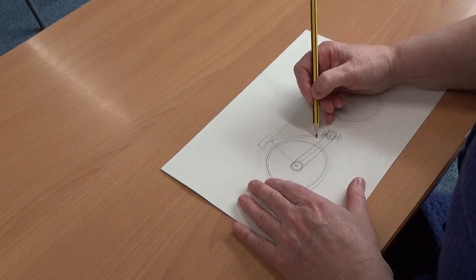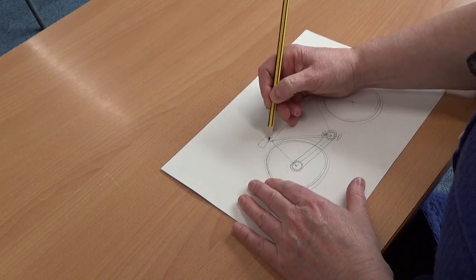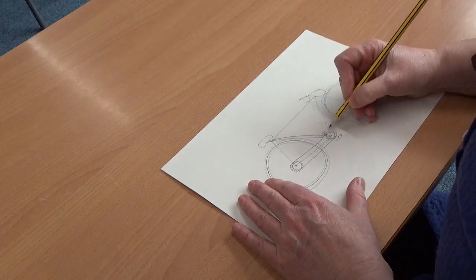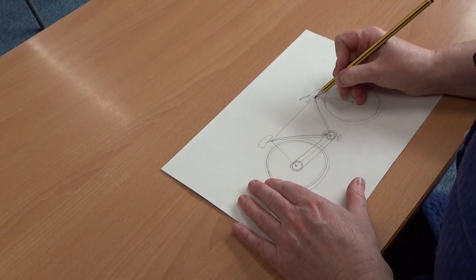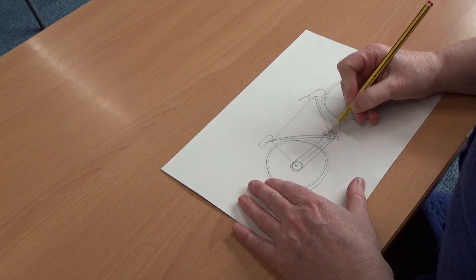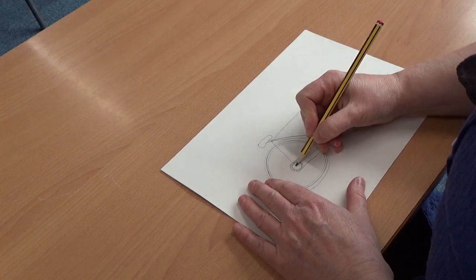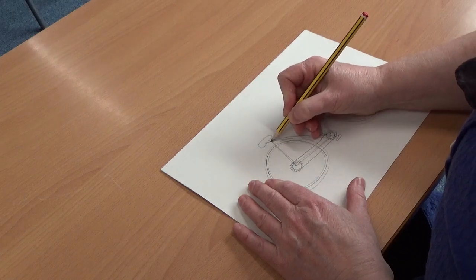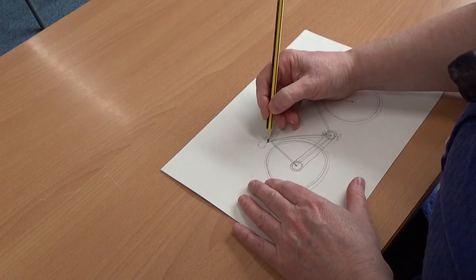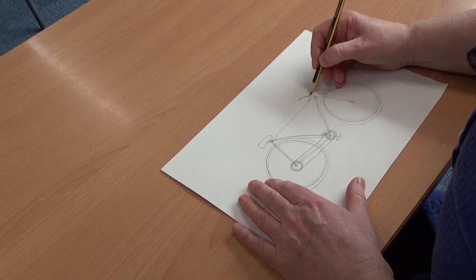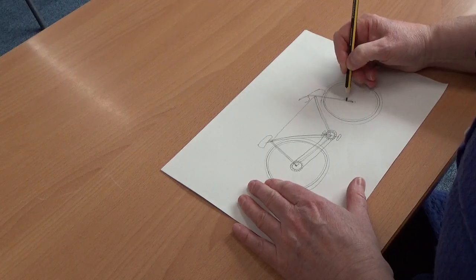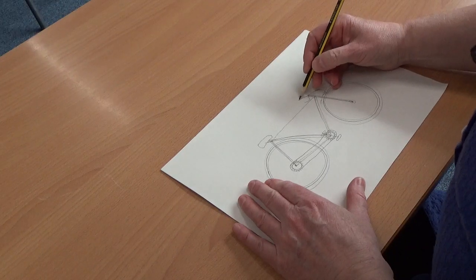You can make this bike frame a bit thicker than just a single line. Make this a bit thicker than just a single line. And along here. And up here. And for your seat as well. And for your front fork. For your handlebars.